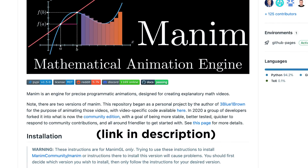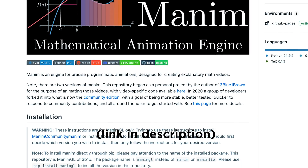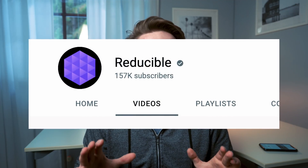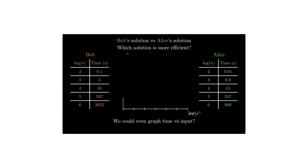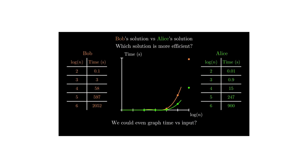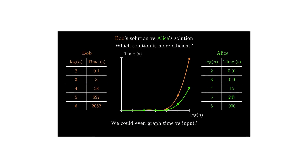He created this visual engine for maths visualizations and open-sourced it, which means a lot of similar channels have popped up. One very similar channel that focuses specifically on computer science is called Reducible, which makes essentially the same style of videos but focused on CS. For example, a video he made about Big O notation was what finally helped me understand what Big O notation actually means.